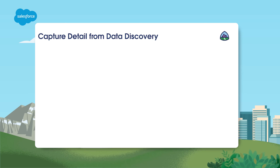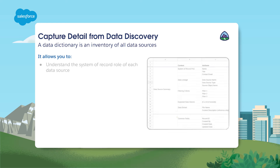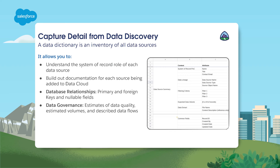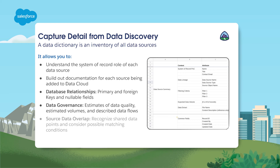During data preparation, how do you begin to capture all of the information from your data discovery? This is where a data dictionary comes in. The data dictionary is an inventory of all your data sources. It allows you to understand the system of record role of each data source, to build out documentation for each source being added to Data Cloud, to review database relationships, to execute data governance — which includes estimates of data quality, estimates of volumes of data, describing data flows, and examining source data overlap, such as recognizing shared data points and considering possible matching conditions.